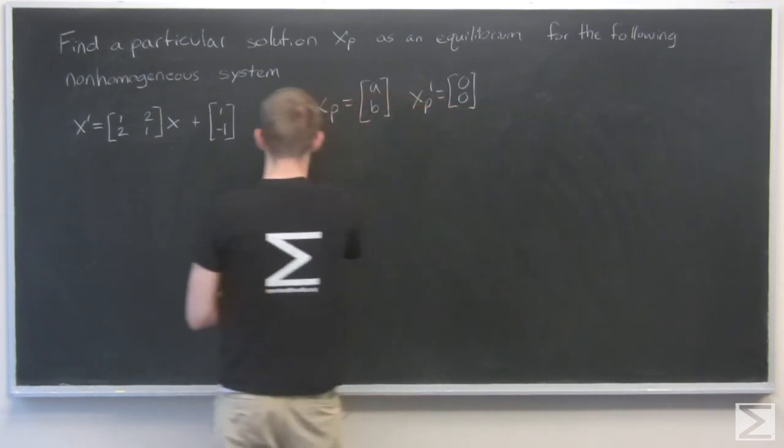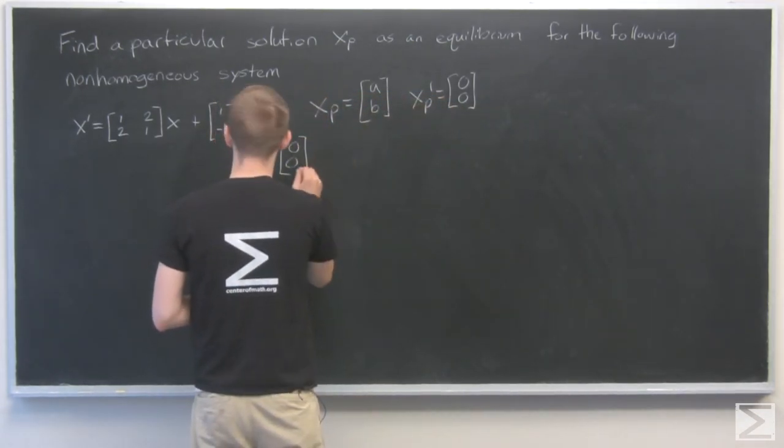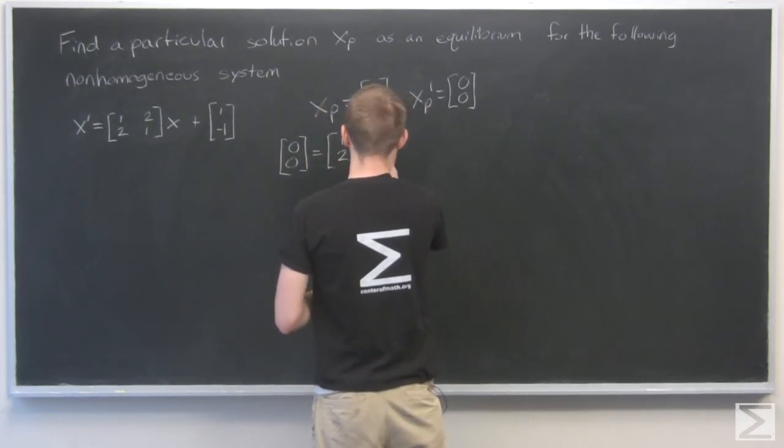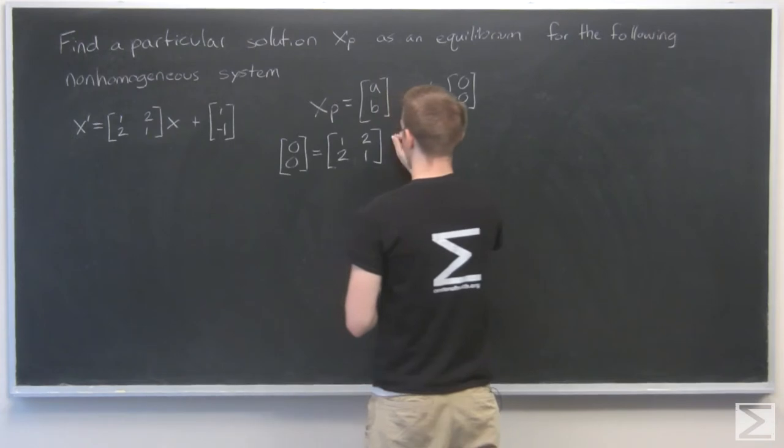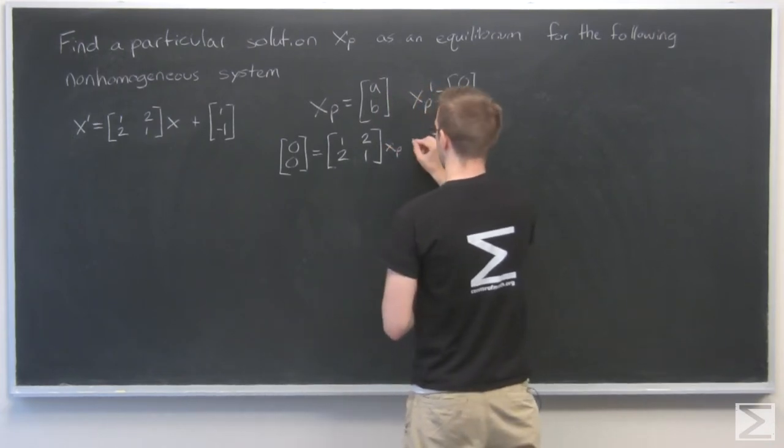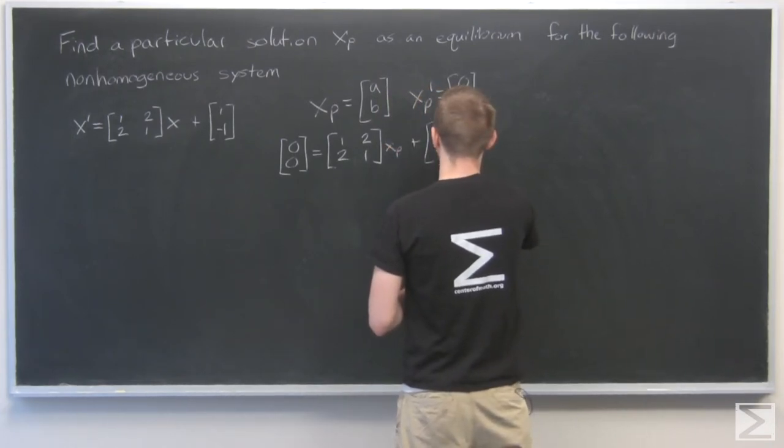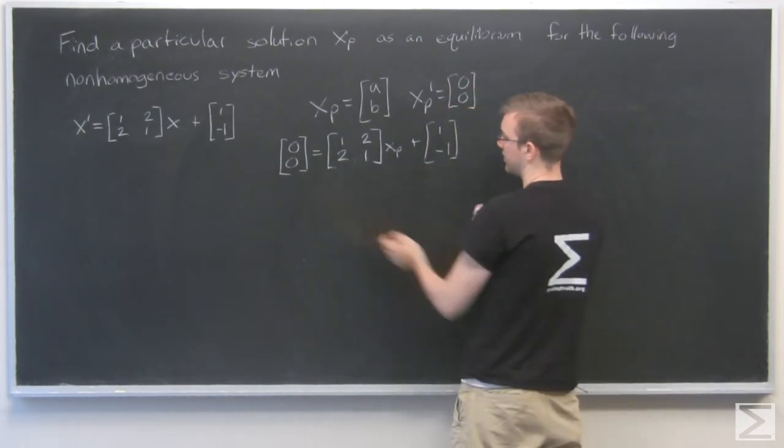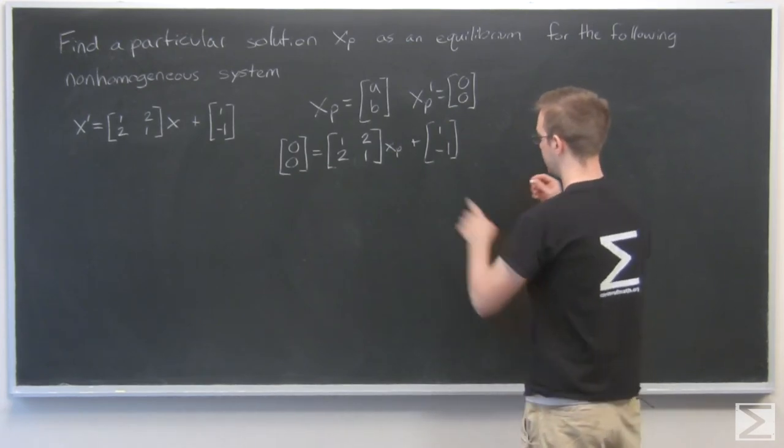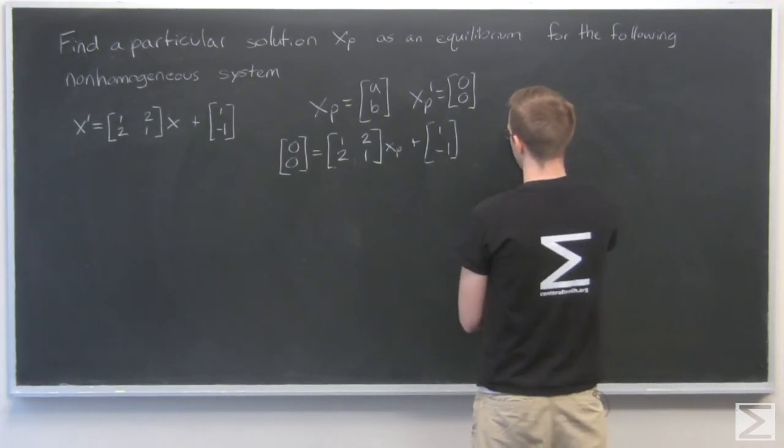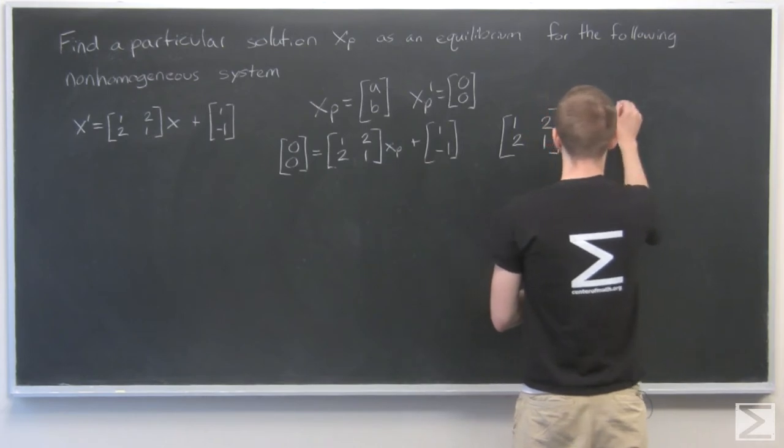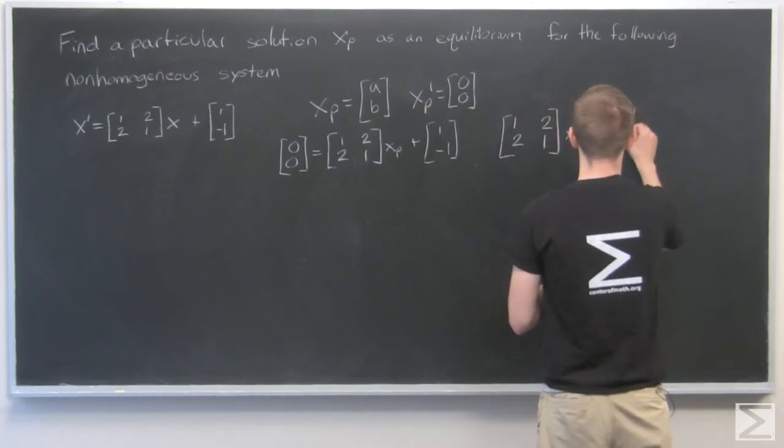So we'll do that. That we have 0, 0 equals the matrix 1, 2, 2, 1 times our xp plus 1, minus 1. I'm going to move this to the other side to solve, to help us solve for xp. So that'll eventually look like this, minus 1 and 1.